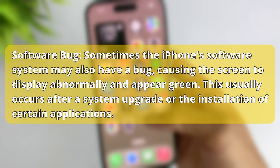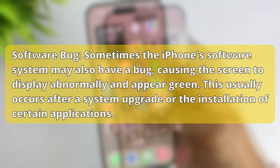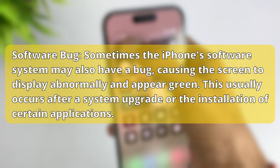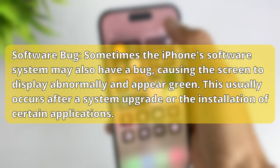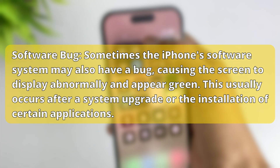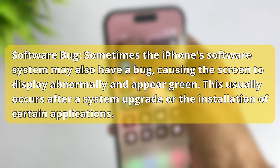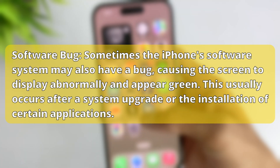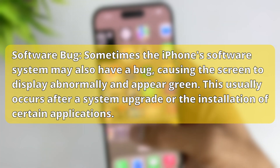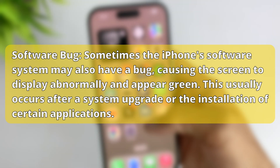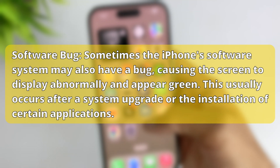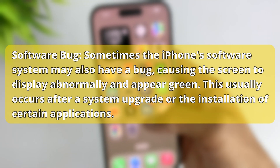Software bug: sometimes the iPhone's software system may also have a bug, causing the screen to display abnormally and appear green. This usually occurs after a system upgrade or the installation of certain applications.